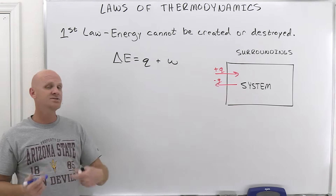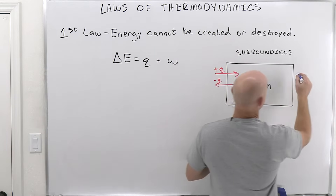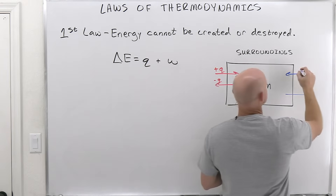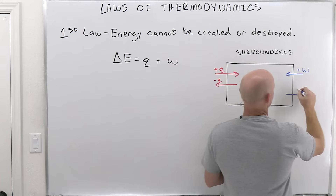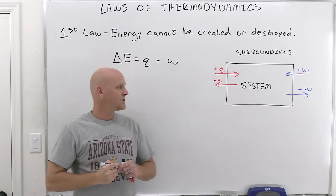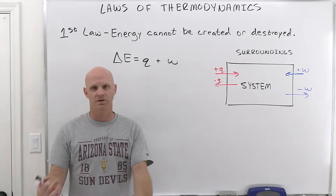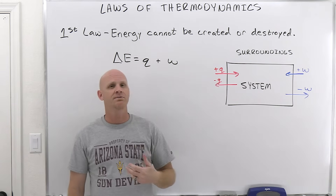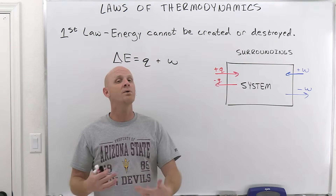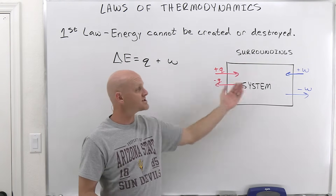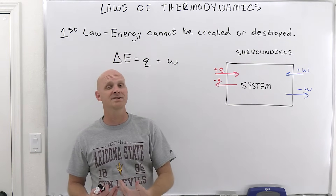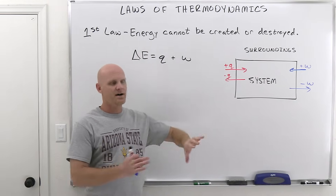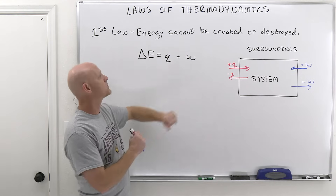The other way energy can be transferred is through mechanical work. The system can gain energy as a result of work — that's positive W — or the system can lose energy as a result of work — that's negative W. When the system is doing work on the surroundings, just like if you do work you use up energy, work has a negative value. Conversely, when the surroundings do work on the system, the surroundings lose energy and the system gains energy — that would be positive work.